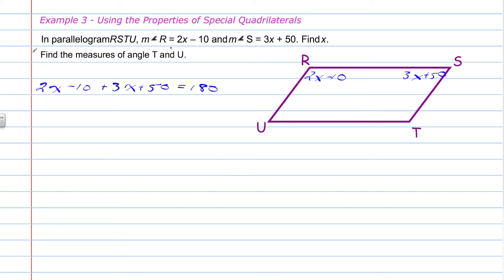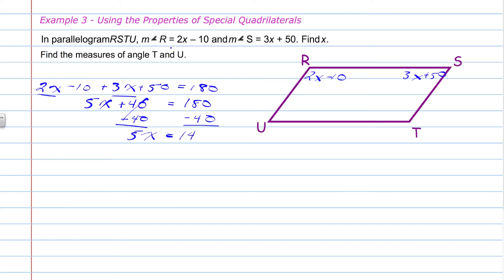Solving this equation: on the left-hand side, add the like terms — 2x and 3x give 5x, and negative 10 plus 50 gives plus 40. So 5x plus 40 equals 180. Subtracting 40 from both sides gives 5x equals 140. Dividing each side by 5 gives x equals 28. That is one of the three answers we need.